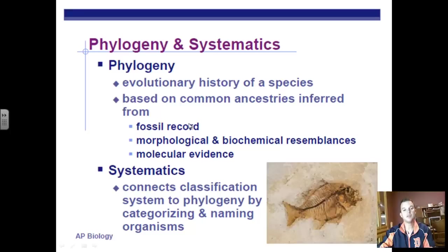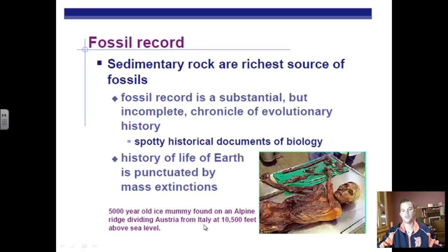Working side by side with phylogeny is the field of systematics. Systematics looks at how we classify organisms. When we take phylogeny and classify organisms based on it, that's the field we call systematics.